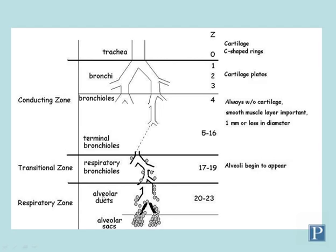After the conducting zone you have the respiratory zone, where you find alveoli — small spherical sac-like structures composed of simple squamous epithelium. Here the epithelium is thin enough that oxygen can efficiently diffuse through into the blood of this highly vascularized portion of the lungs. Terminal bronchioles mark the end of the conducting zone; once you start to see alveoli, you're in the respiratory zone. We're ignoring the transitional zone here.